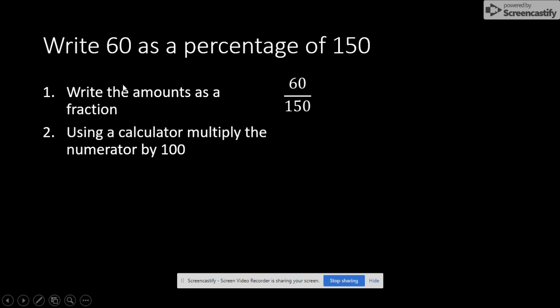Right, next thing you do is you use your calculator and you multiply the numerator by 100. So that would be this 60 here. So you would go 60 times by 100 would give you 6,000.